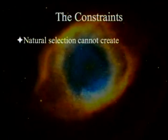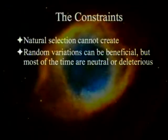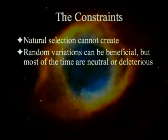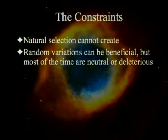Natural selection cannot create. All natural selection can do is select between options that are already there. In order to create, you need something that creates the stuff, and then natural selection has to select the right one. Natural selection cannot work on 'eventually I want a trunk for an elephant, so I'll select for longer noses' — the noses have to have advantages as time goes on that are not outweighed by the disadvantages. Random variations can be beneficial, but most of the time they're neutral or deleterious — they actually make things worse.